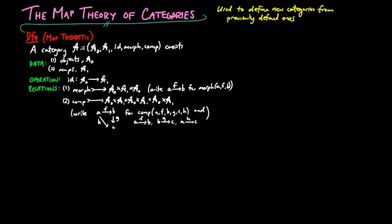This structure is subject to the following axioms. Axiom 1: For each object A, identity A is a morphism from A to A.